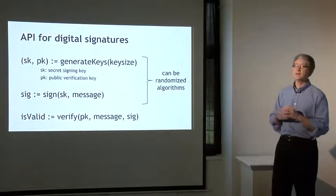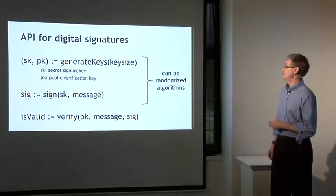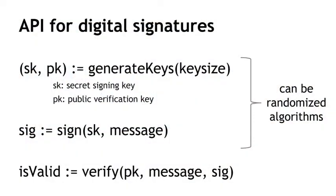Here's an API for digital signatures. There are three operations that we need to be able to do. The first is we need to be able to generate keys. We have a generateKeys operation, and we tell it a key size — how big in bits should the keys be? This produces two keys: SK and PK. SK will be a secret signing key, information you keep secret that you use for making your signature. PK is a public verification key that you give to everybody so anyone can verify your signature. The second operation is the sign operation: you take your secret signing key and some message, and it returns SIG — a signature, just some string of bits.